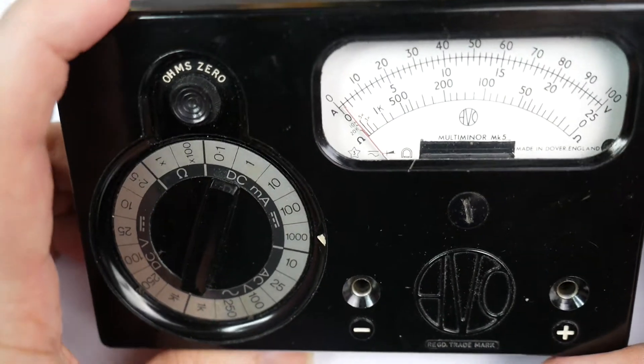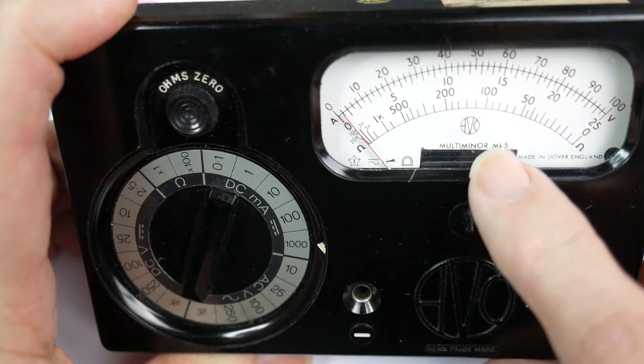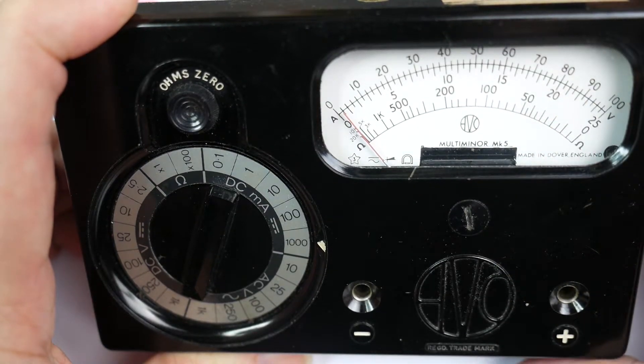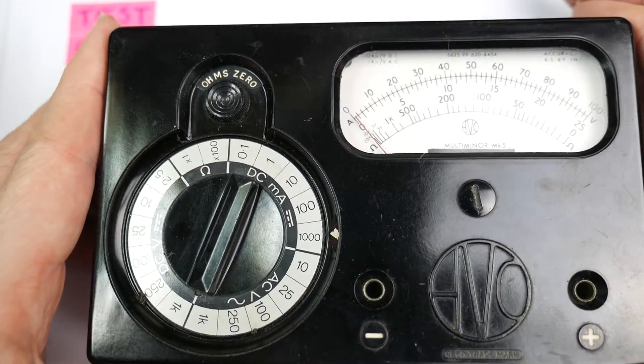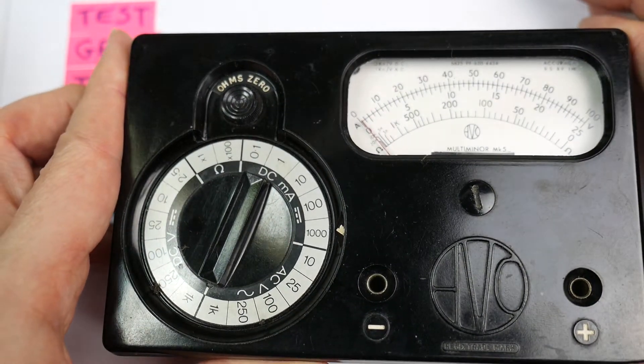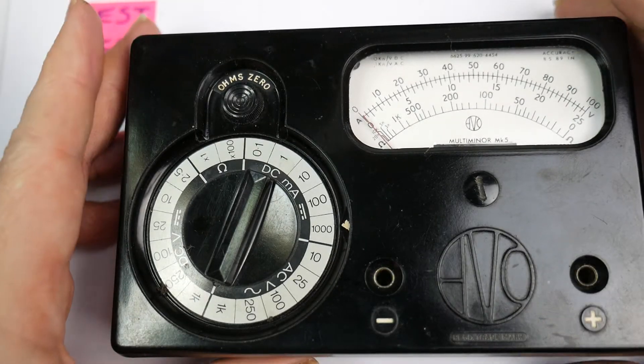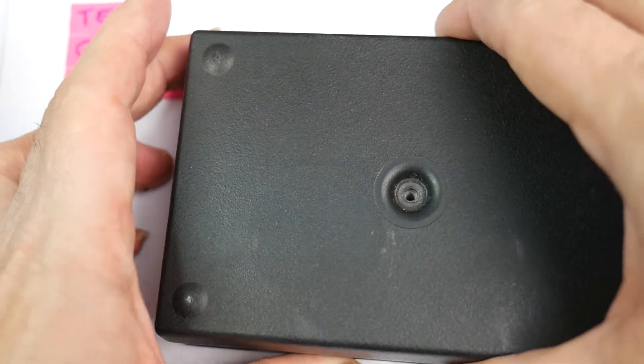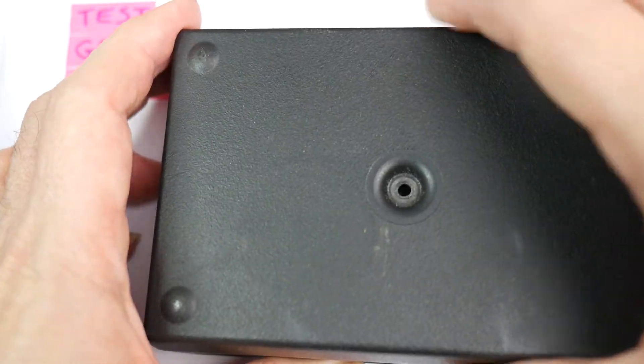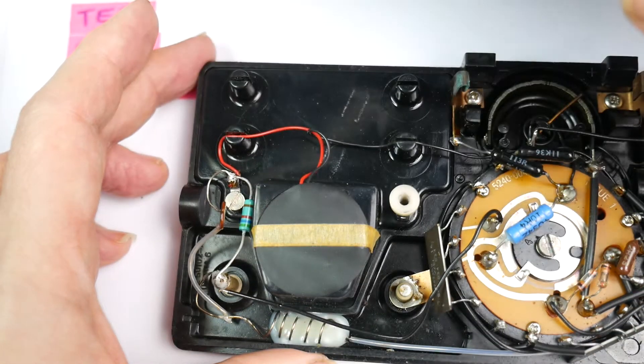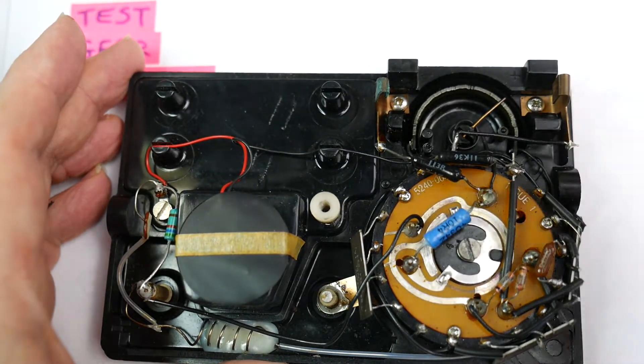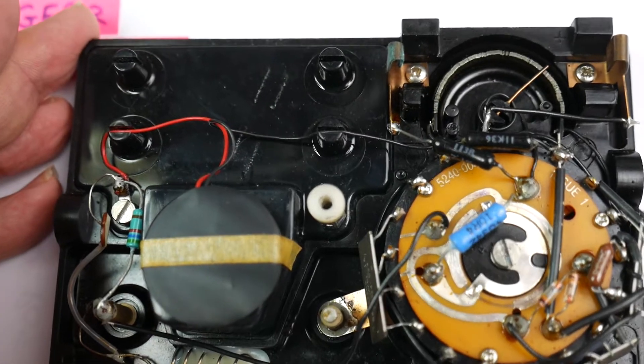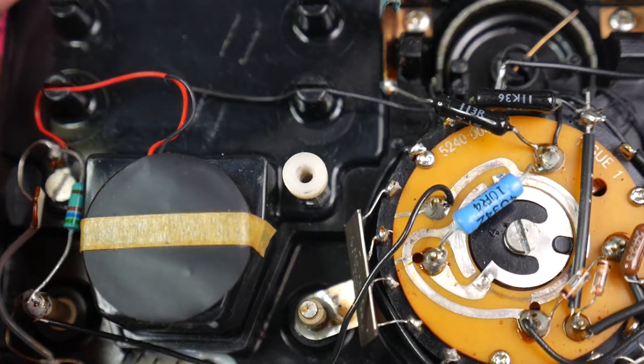Because it says Mark 5 on the scale, I think this could be slightly newer than it might look from the Bakelite on the outside. Let's look at the back of it. I've already taken the screw out so we can just lift the back off. What have we got?